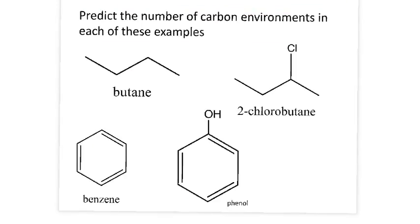So what I would like you to do now is pause the video and see if you can predict how many different carbon environments you would have in each of these examples: butane, 2-chlorobutane, benzene, and phenol. If you've not seen benzene and phenol before, they're what's called aromatic compounds, and don't worry too much about it.